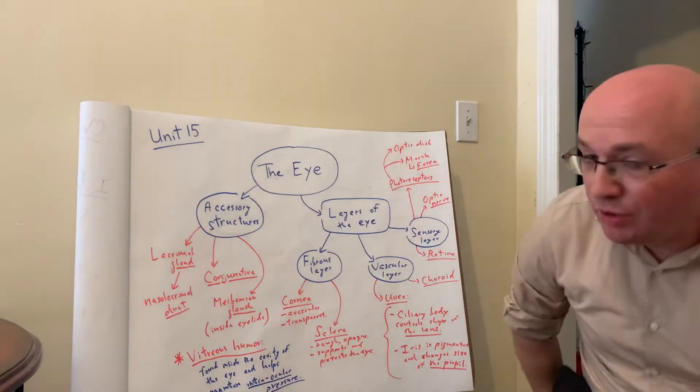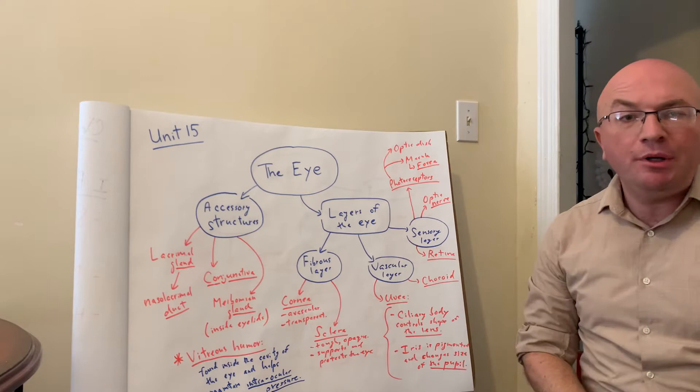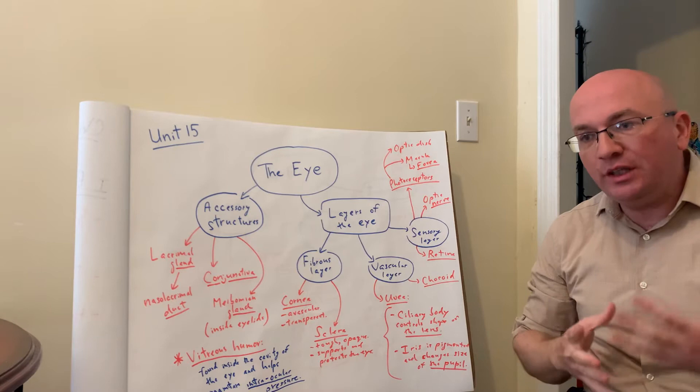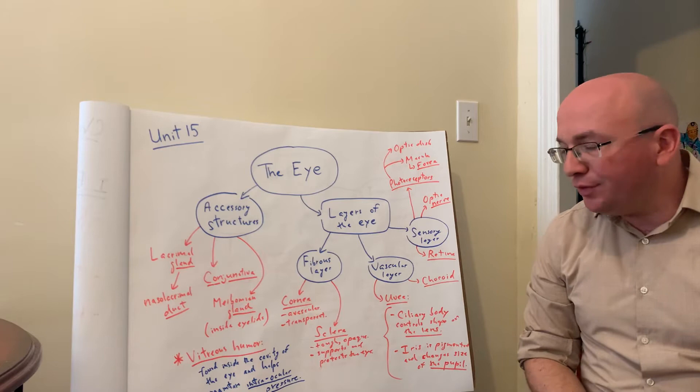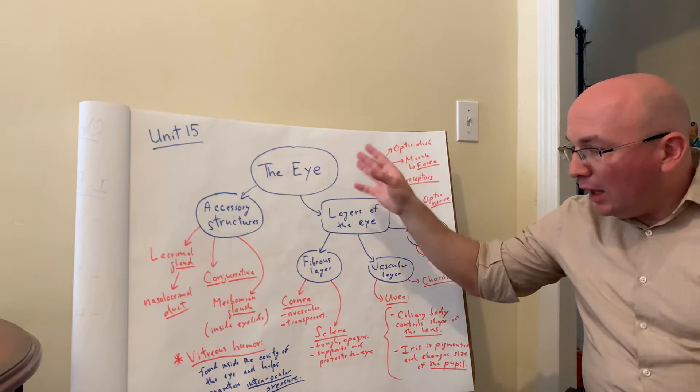Welcome to Unit 15 in the Laboratory Manual for Anatomy and Physiology students. In this chapter, we're going to be going over the anatomy of the eye and the ear. The author discusses different special senses, such as sense of taste, vision, hearing and balance, and others. We're going to focus exclusively on the eyesight, the anatomy of the eye, and hearing balance, which is done through the ear.